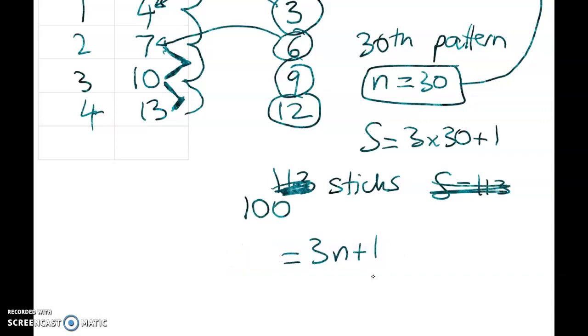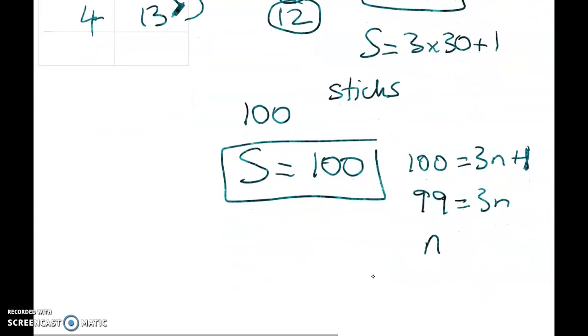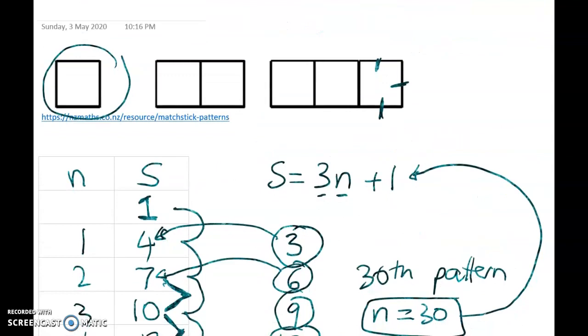Let's make it 100 sticks. Which pattern has 100 sticks? Well, this is just a big mess. I hope no one important out there is watching. More important than you guys. Jokes. s equals 100. So s is 100. We're trying to solve this equation. 100 equals 3n plus 1. I take 1 off both sides. I get 99 equals 3n. That's better. n equals 33. So the 33rd pattern is going to have 100 matchsticks. So there you go. That's how we go from using a picture to going to a table to getting a rule.